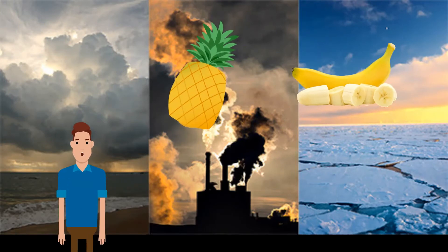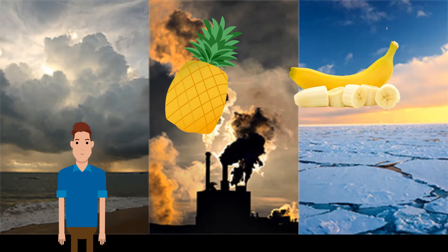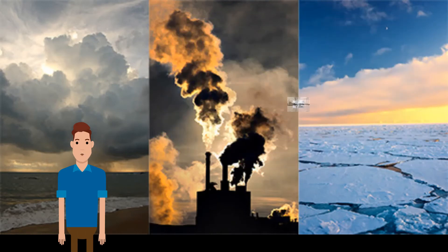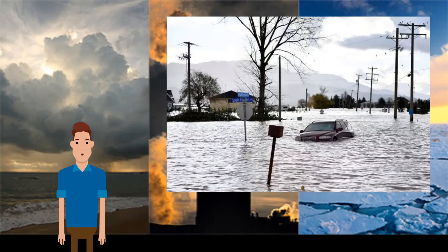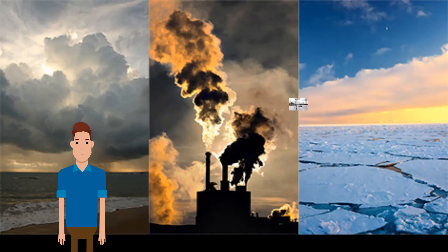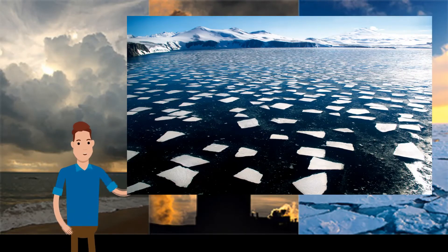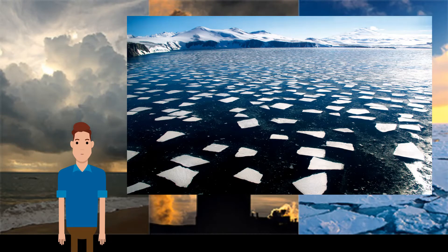Global warming has both advantages and disadvantages. Britain will be able to grow a greater range of crops, and warmer weather may help with the tourist industry. However, there will be increased dangers of coastal flooding, water shortages, pests and diseases. Globally, the melting of polar ice caps will cause many low-lying areas to flood, and droughts, storms and floods will become more frequent.